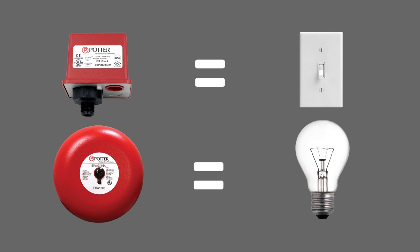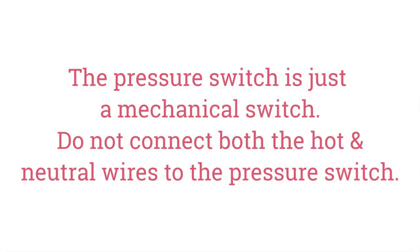The hot wire through the normally open contacts of the pressure switch out to the bell. The neutral wire does not connect to the pressure switch at all. The neutral wire goes from the service panel straight to the white wire of the bell.